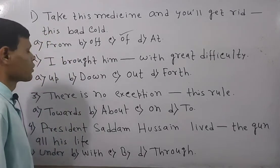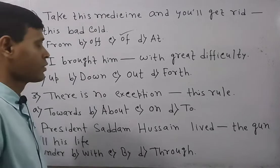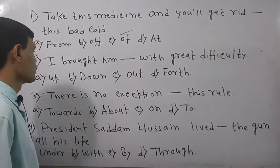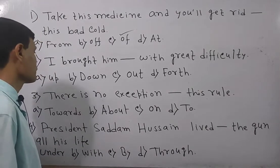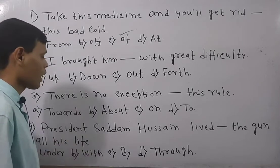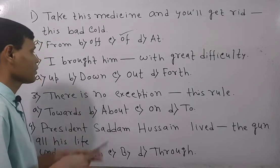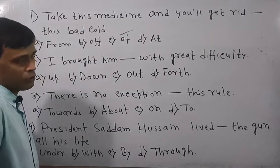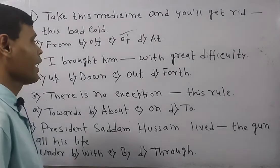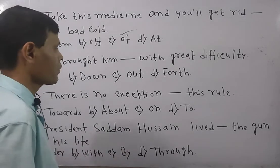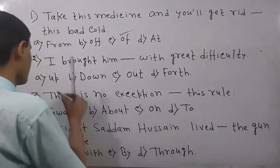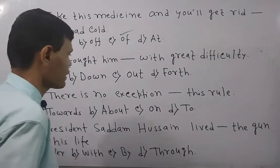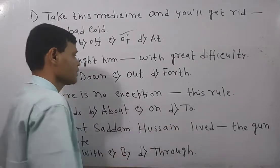So the answer should be 'brought up,' meaning reared — R-E-A-R-E-D. It should not be confused with 'down,' 'out,' or 'forth.' This is actually part of a phrasal verb. Now look at the next question: 'There is no exception ___ this rule.' There are four options: towards, about, onto, to.